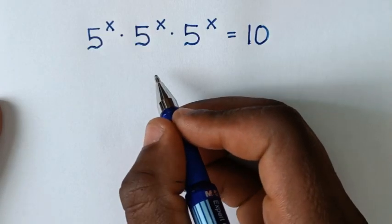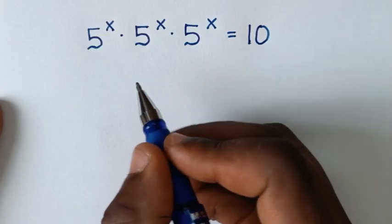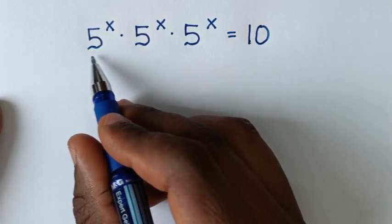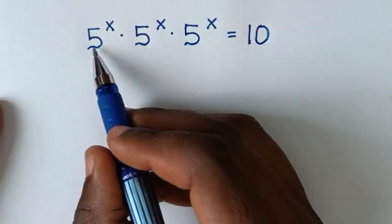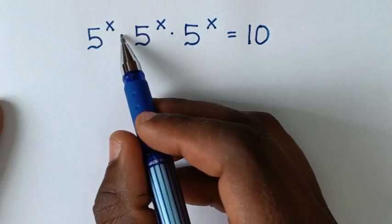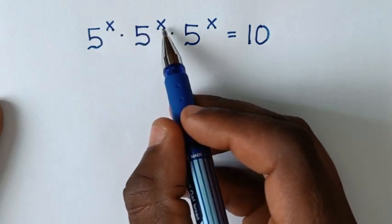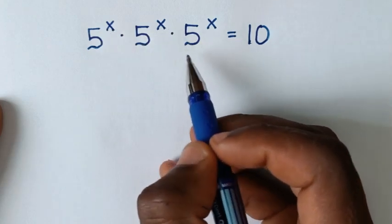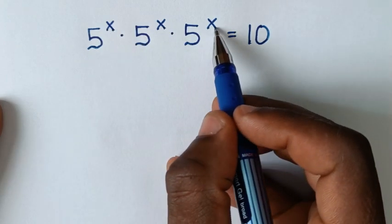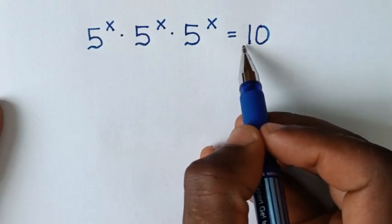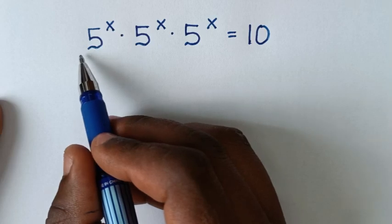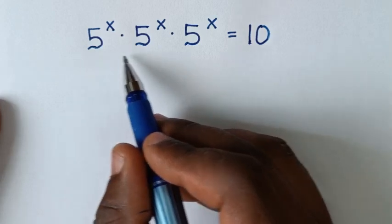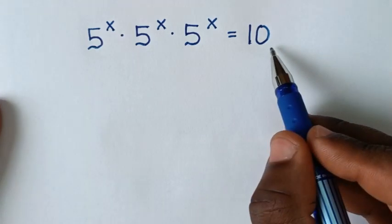Hello, you are welcome to solve this math problem, which is 5 power x times 5 power x times 5 power x is equal to 10, to find the value of x from this equation.